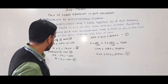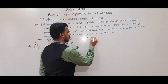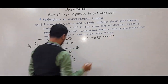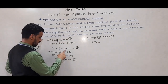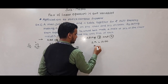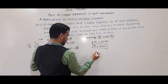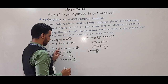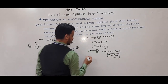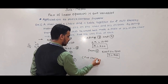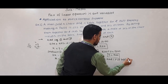Now solving equations 3 and 4 by adding them: Y is eliminated, 2X = 1200, so X = 600. Substituting X = 600 into equation 3: 600 + Y = 1300, so Y = 700. Therefore, the cost price of chair is Rs. 600 and the cost price of table is Rs. 700.